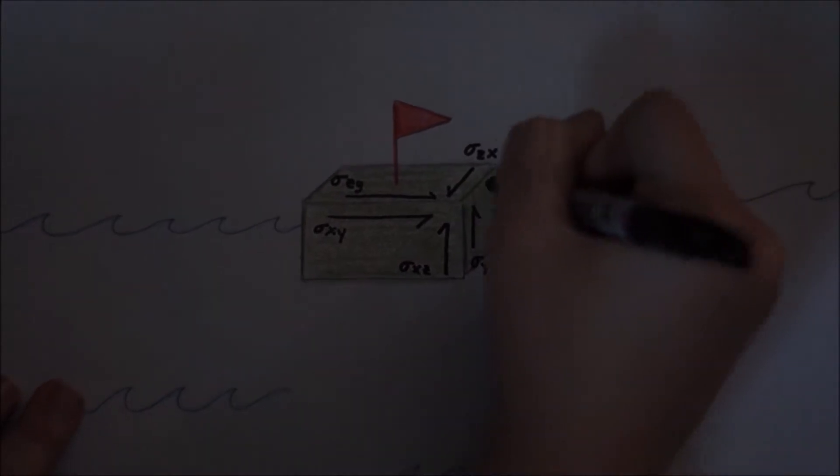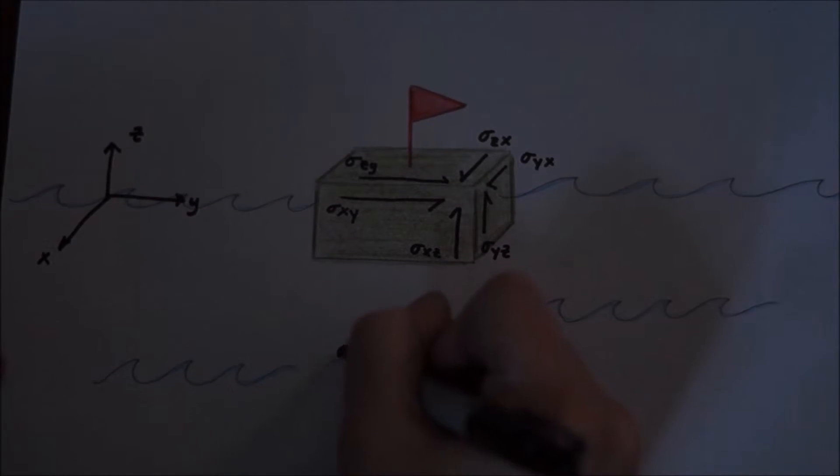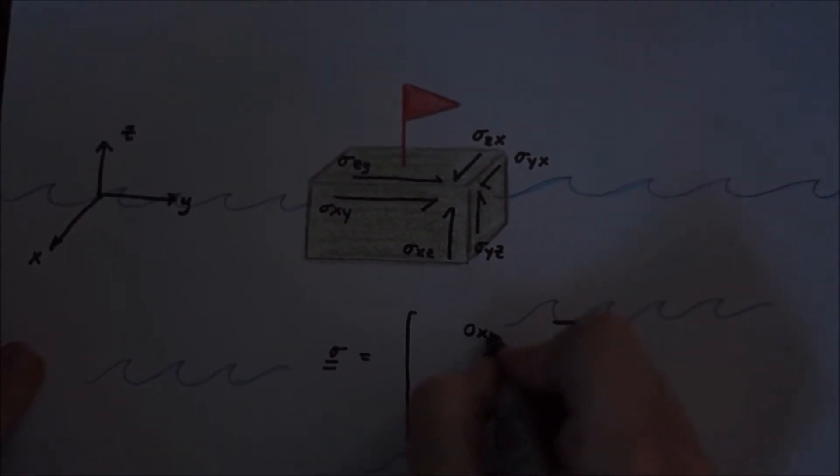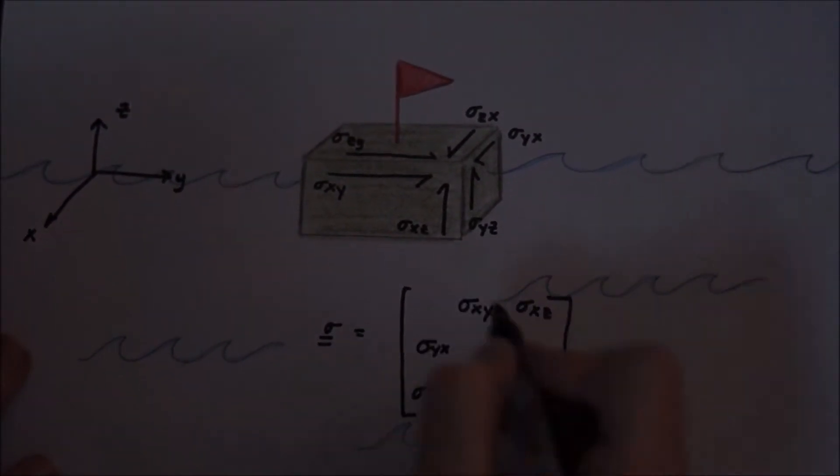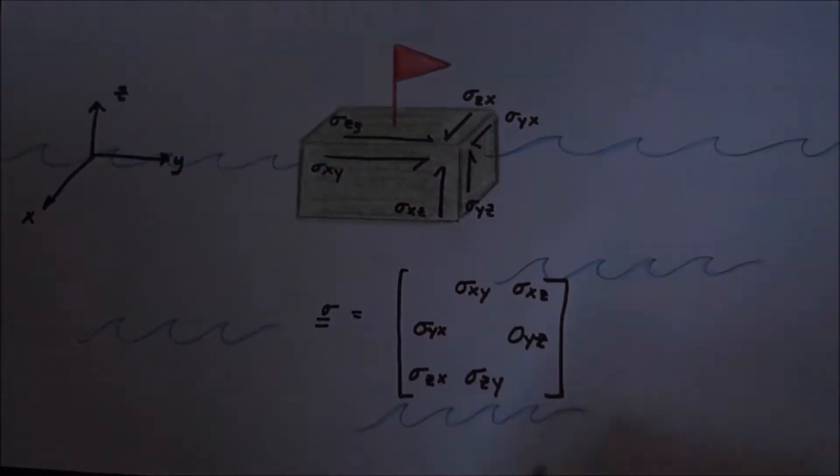They are also known as tangential stresses, deviatoric stresses, or drag. The first subscript represents the face on which the stress is acting, and the second subscript represents the direction of the stress. For example, sigma xy represents a stress on the positive x face in the positive y direction.